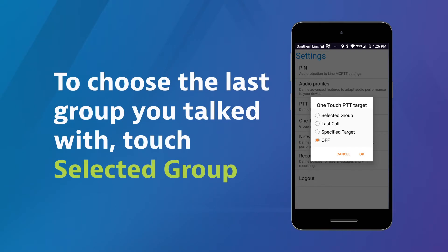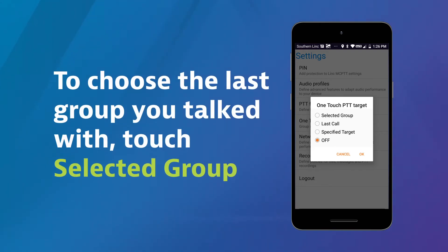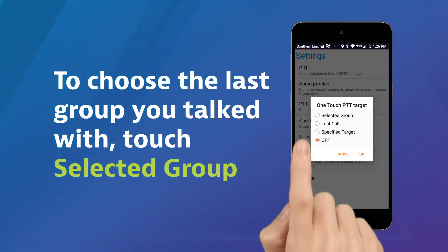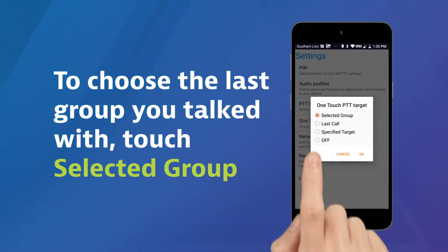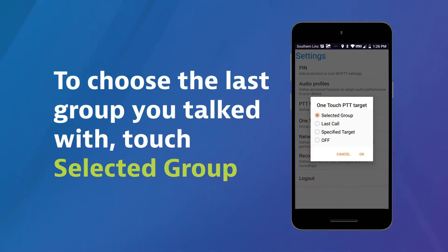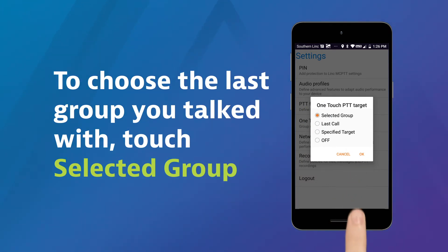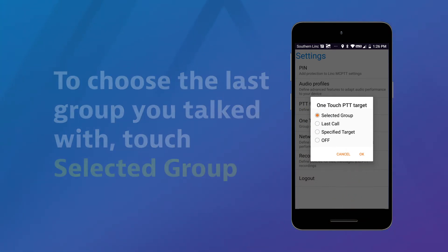To choose the last group you talked with, touch Selected Group from the one-touch PTT target screen, then OK to accept or Cancel.